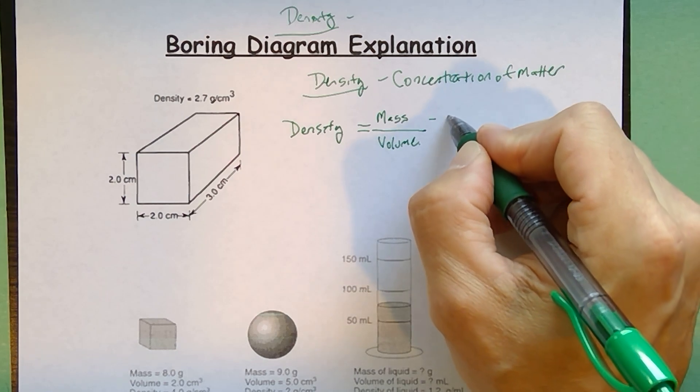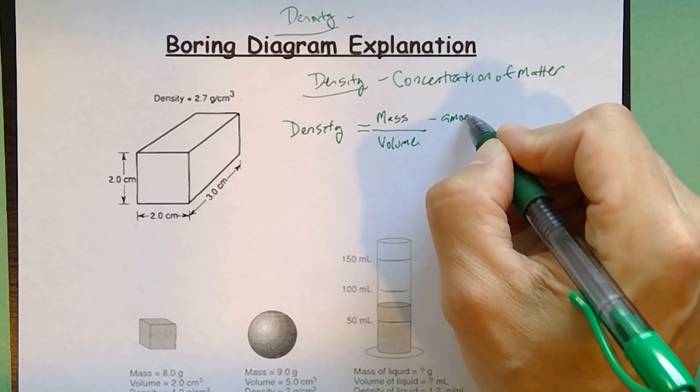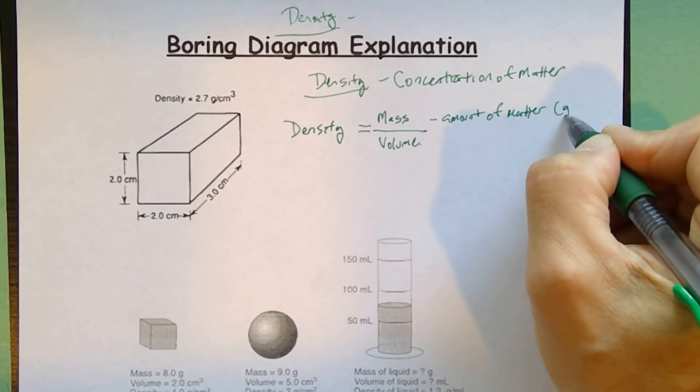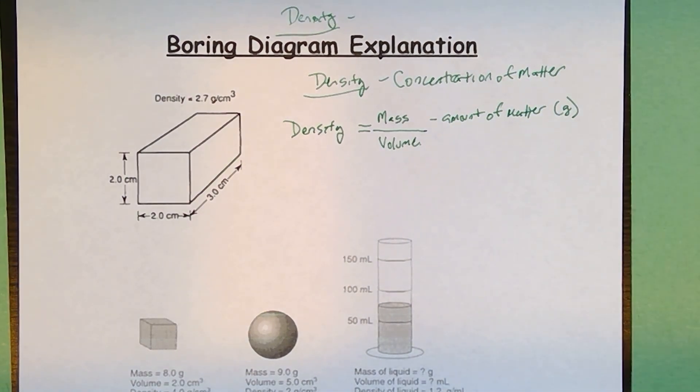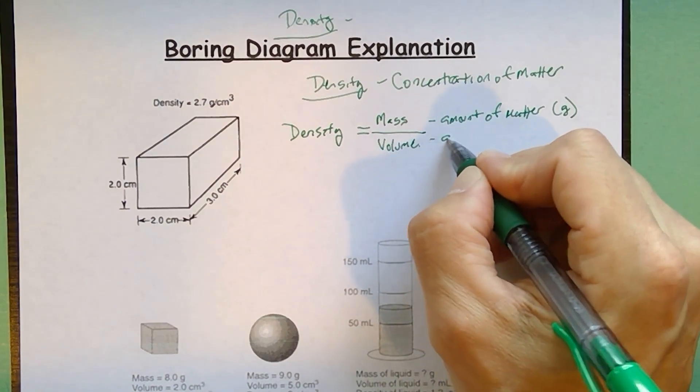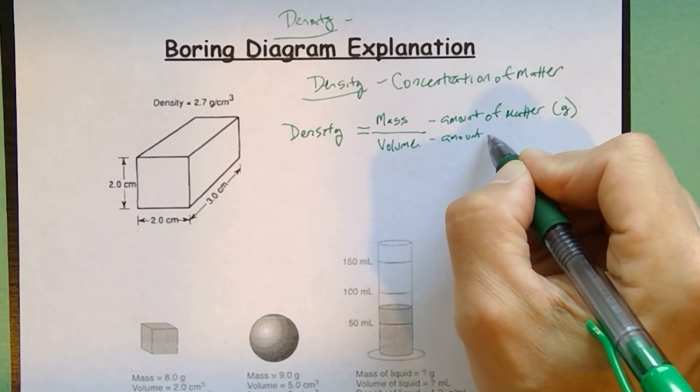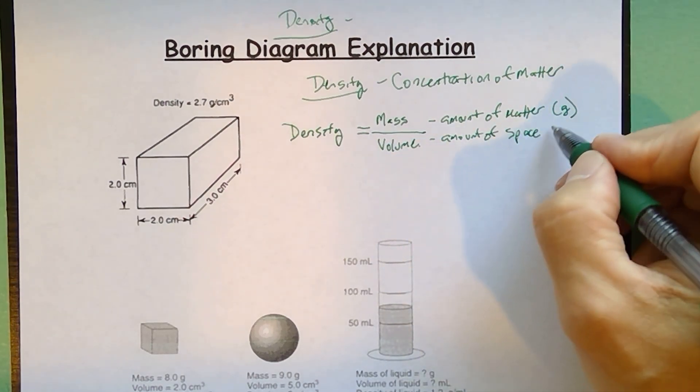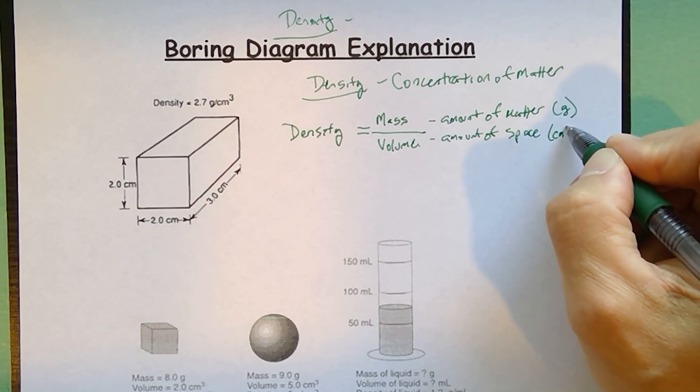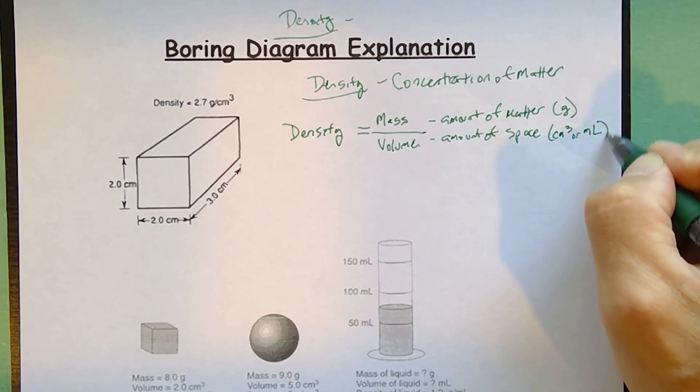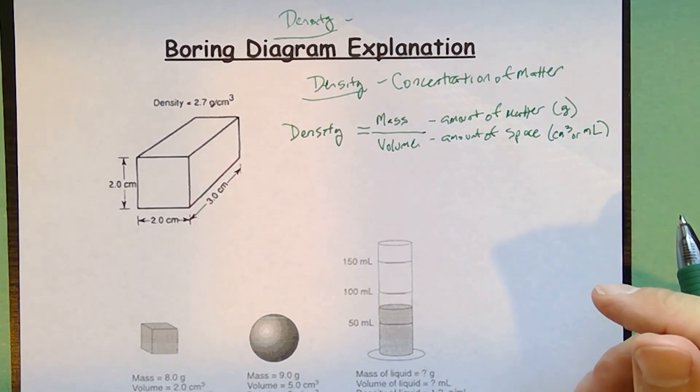Mass, you should know, is the amount of matter. It's going to be measured in grams. It's how much stuff you have. Volume is going to be the amount of space. Now when you're looking at the amount of space, the two units that we might use are cubic centimeters or milliliters if it is a liquid volume.